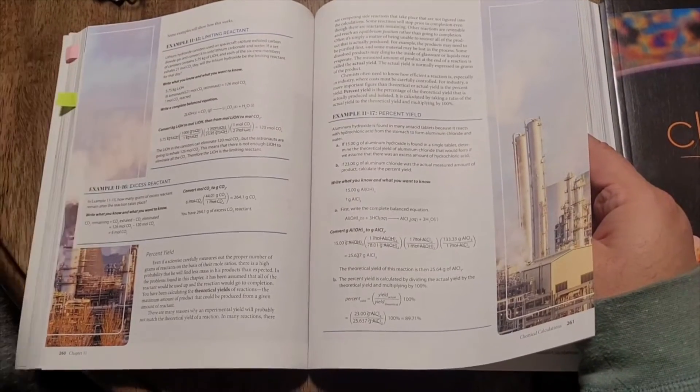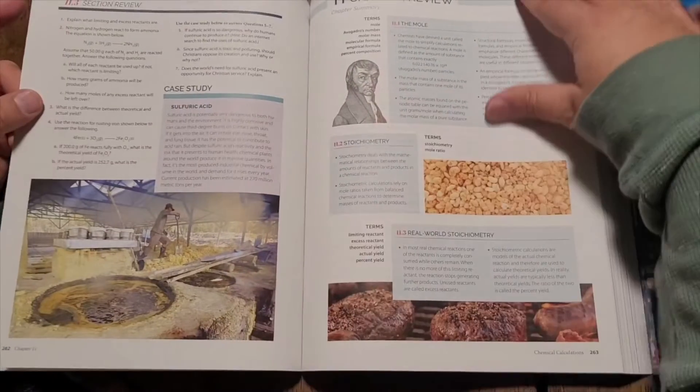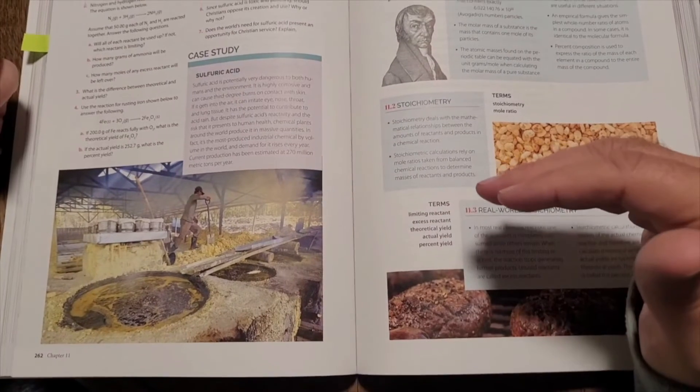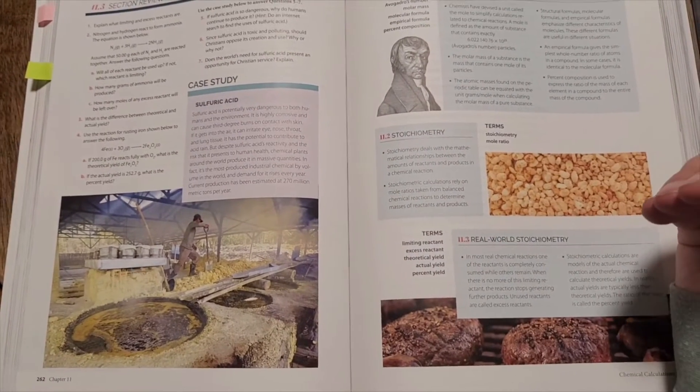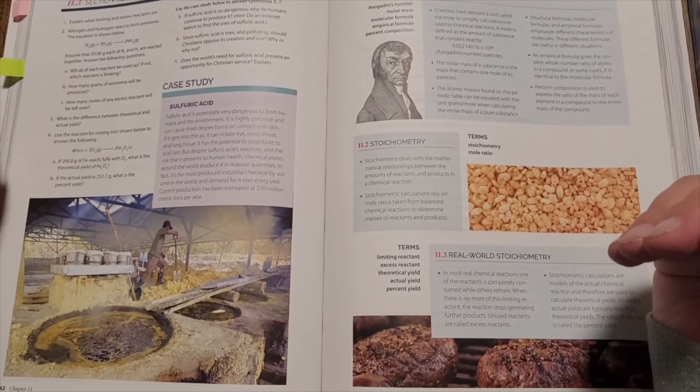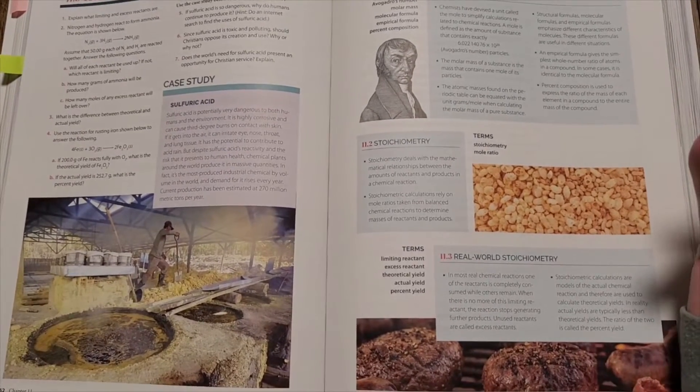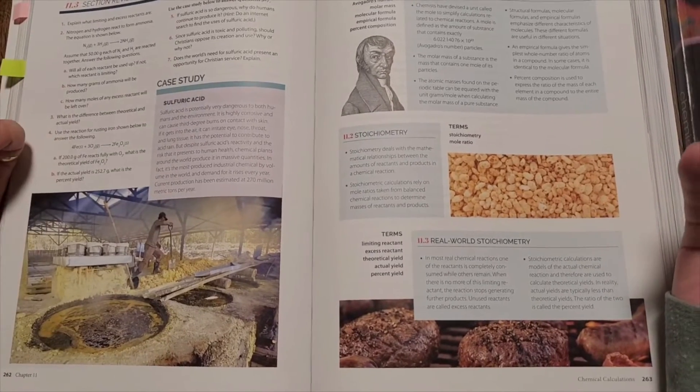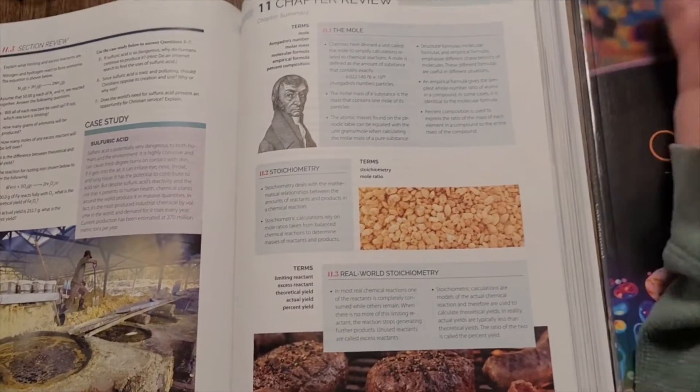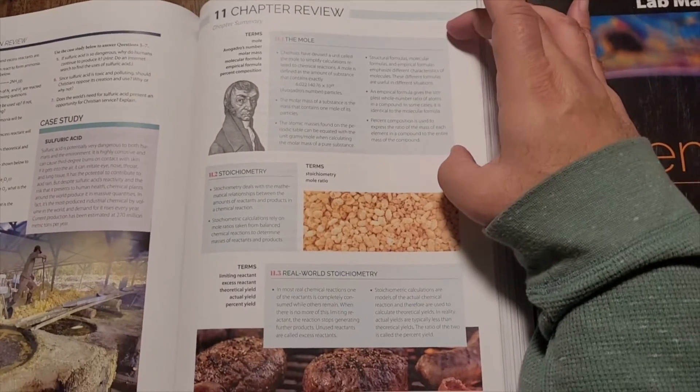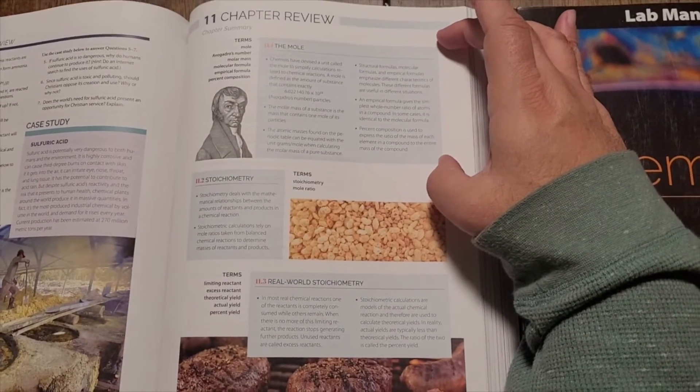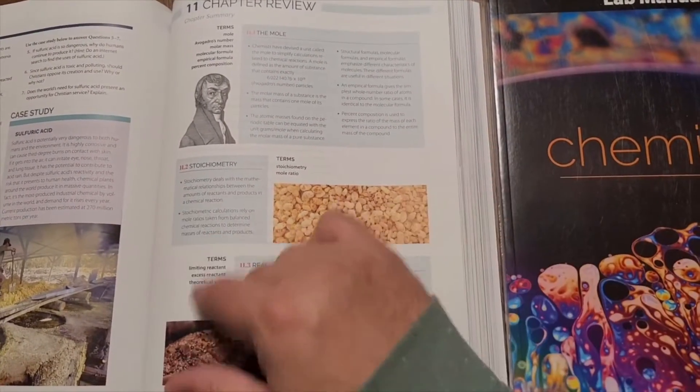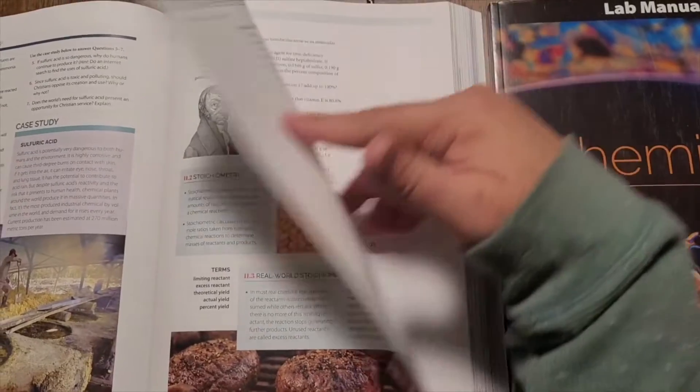The case study on sulfuric acid, it's incredibly dangerous, not only to us, but to humans, because it's so corrosive. But it's also incredibly important to make manufacturing everything that we use in modern society. So it's kind of a big deal. The chapter reviews are great. It's a very nice, condensed refresher of what was covered in each one and all the terms and where you can find them in each chapter or each section.